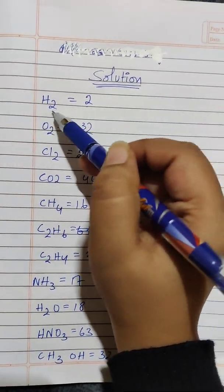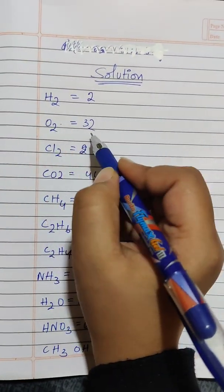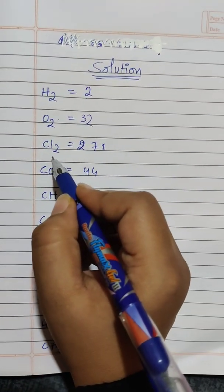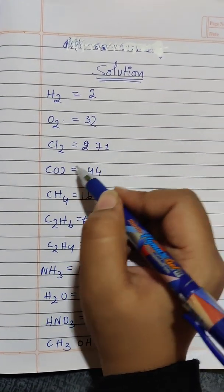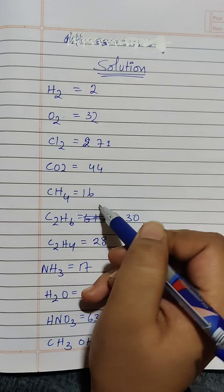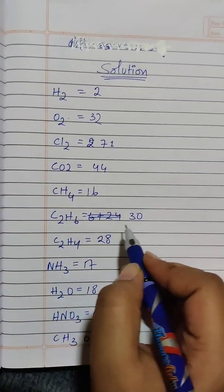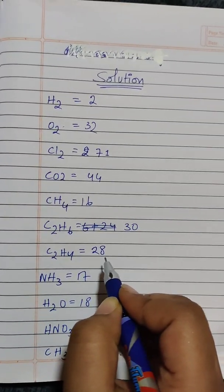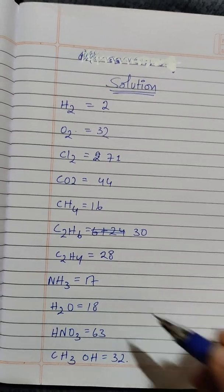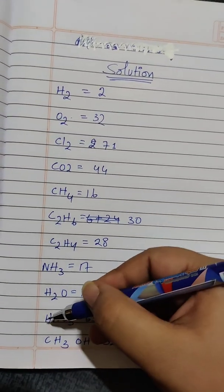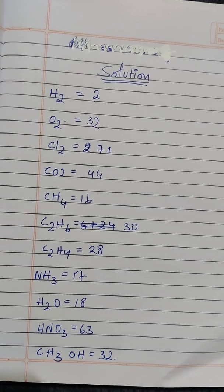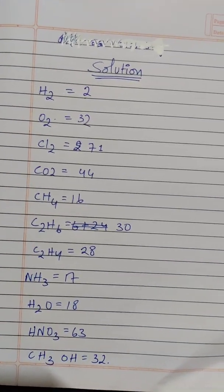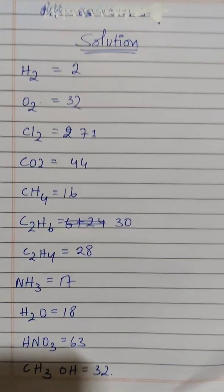H2 is 2. O2, 32. Chlorine twice, 71. CO2, 44. CH4, 16. C2H6, 30. C2H4, 28. NH3, 17. H2O, 18. HNO3, 63. CH3OH, 32.